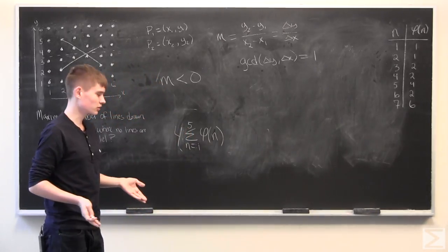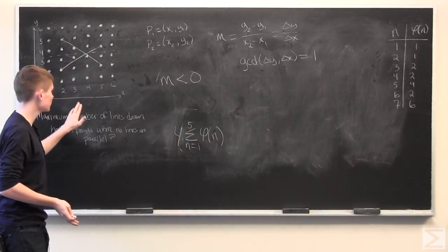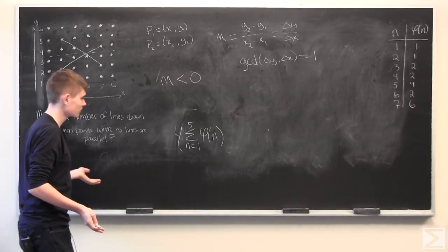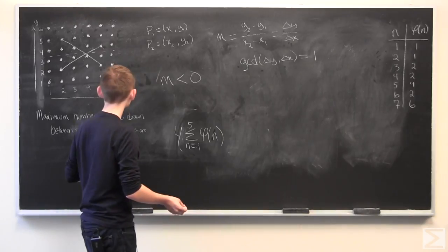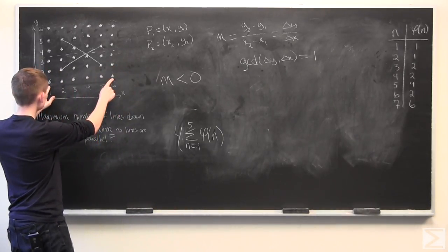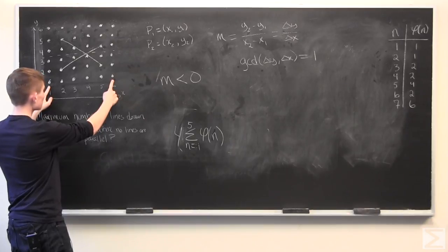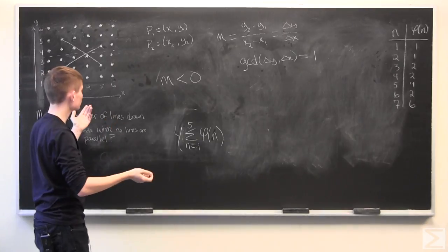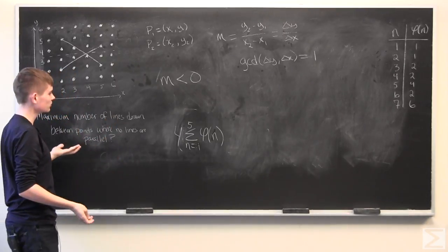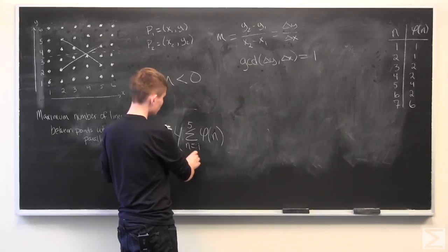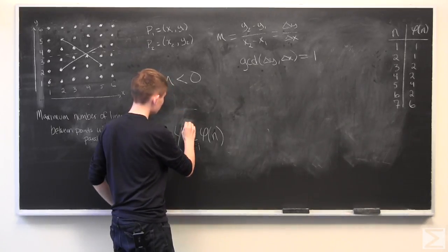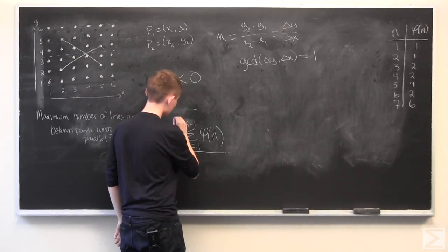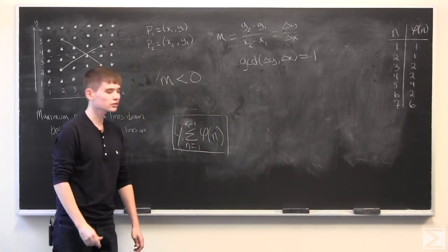And the last part of this question was to be able to generalize this question to any k by k grid of dots. And to do that, we just have to see that the maximum difference between x1 and x2 is k minus 1 on a k by k grid. And so we're just summing from n equals 1 to k minus 1. And that is how to generalize it on a k by k grid.